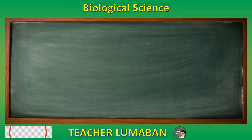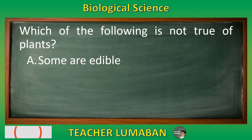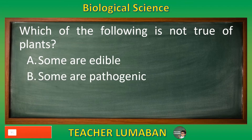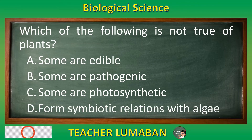Which of the following is not true of plants? Letter A: Some are edible. Letter B: Some are pathogenic. Letter C: Some are photosynthetic. Letter D: Forms symbiotic relations with algae.